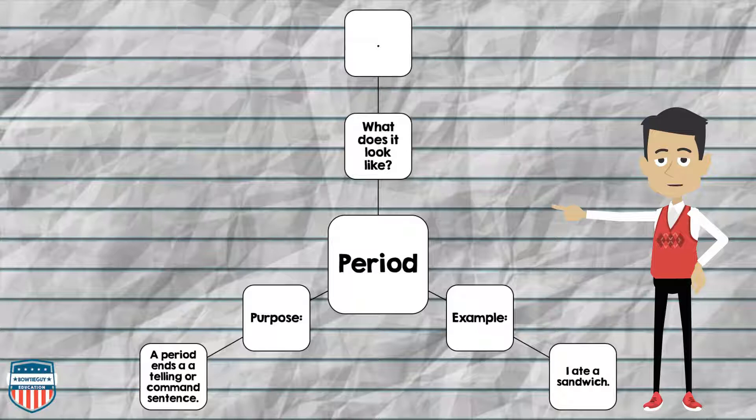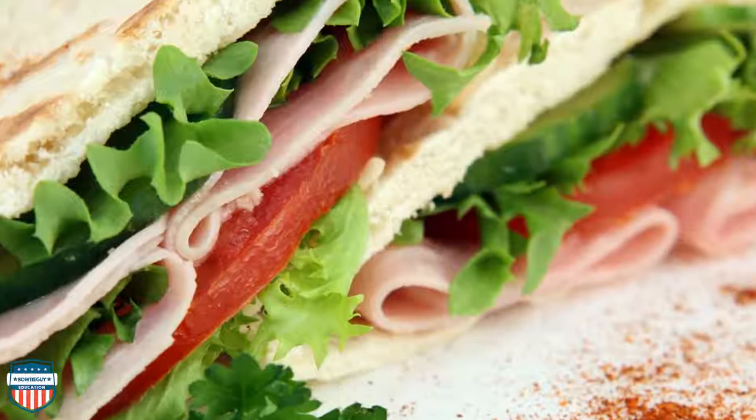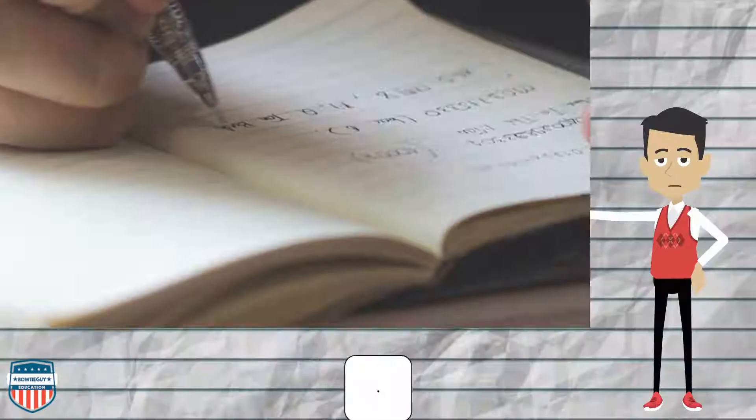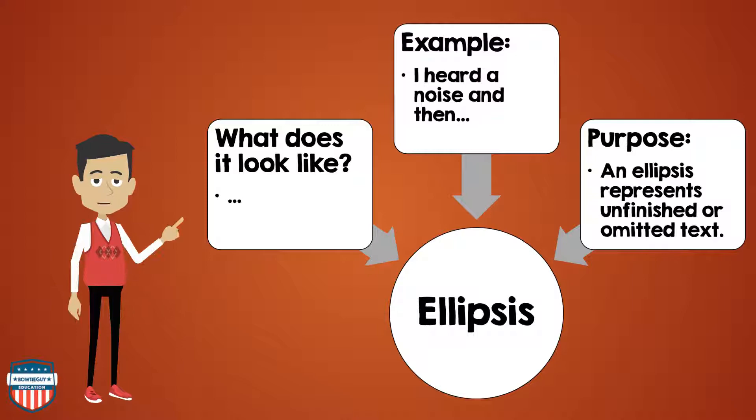First, let's talk about the period. What does it look like? The period is a dot. Here's an example of a period in use: I ate a sandwich, and you'd put a period at the end. What is the purpose of a period? A period ends a telling or command sentence.